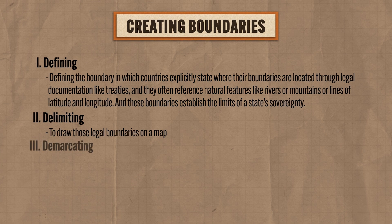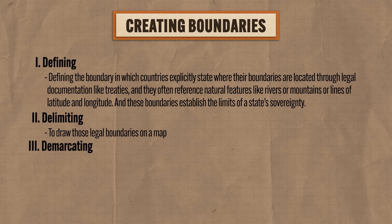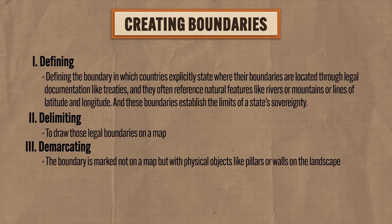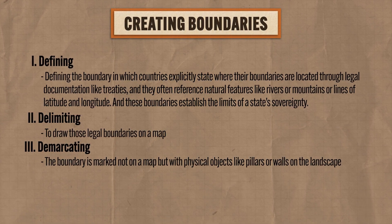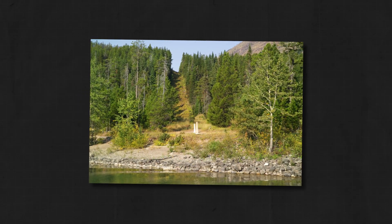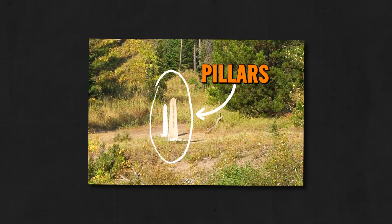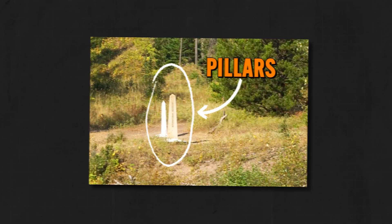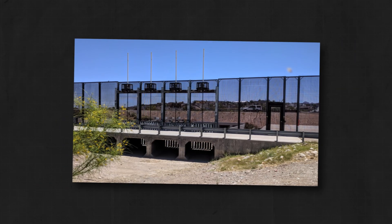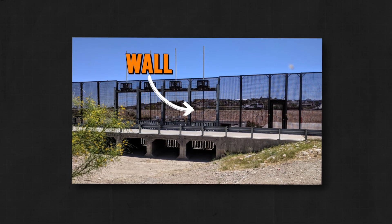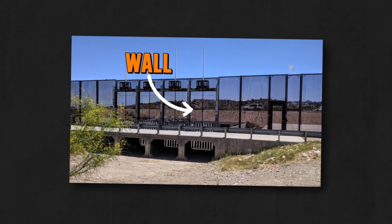Then the third phase is demarcating the boundary, which means that the boundary is marked not on a map but with physical objects like pillars and walls on the landscape. For example, all along the 49th parallel, both states have erected pillars as a physical indication of the boundary's location. Or go to the southern border of the United States with Mexico, and along some parts of the border is a physical wall. Now that's controversial, but all I'm saying is there's a wall.